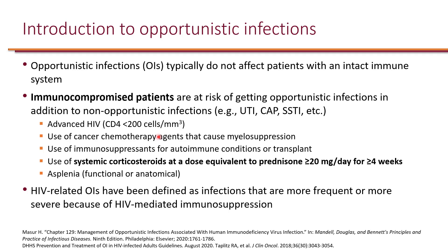That includes both solid organ transplant as well as stem cell transplant. One important thing to keep in mind is that use of systemic corticosteroids at a dose equivalent to prednisone 20 mg per day or more for at least 4 weeks is considered immunosuppression, because that can affect the T cells.